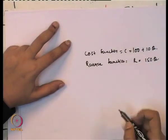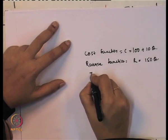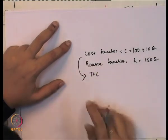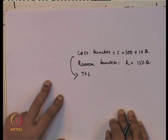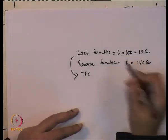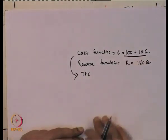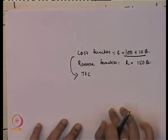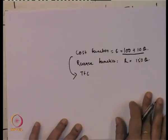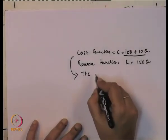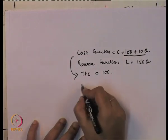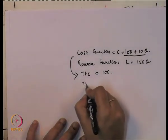Assume that the cost function is C = 100 + 10Q and the revenue function is R = 150Q. In this total cost function, the fixed cost equals 100, and the total variable cost varies at a constant rate of 10 per unit.